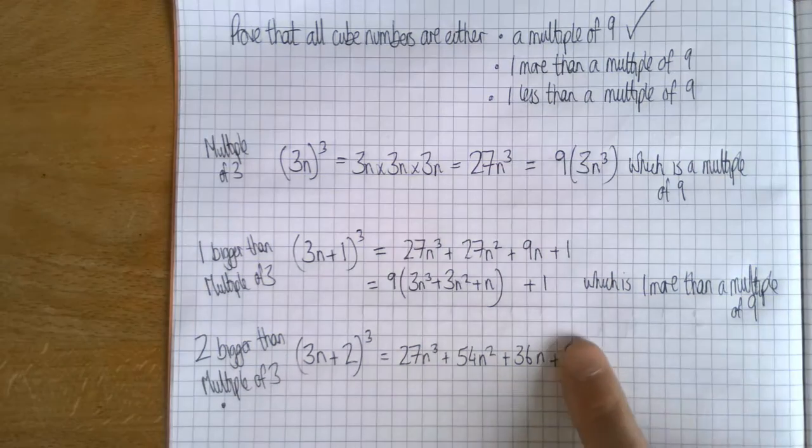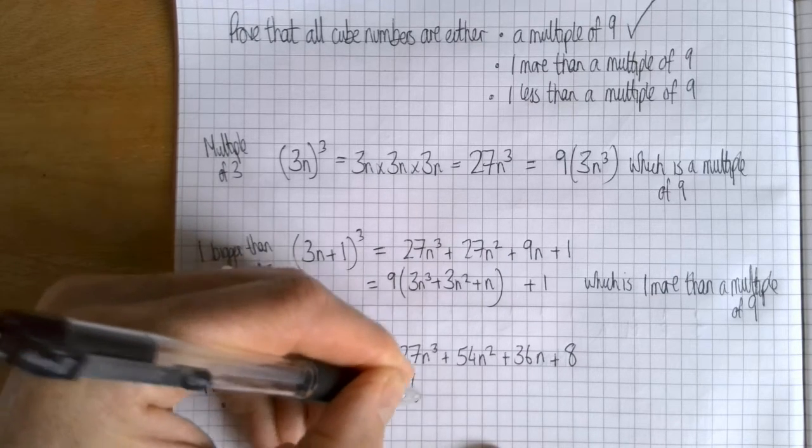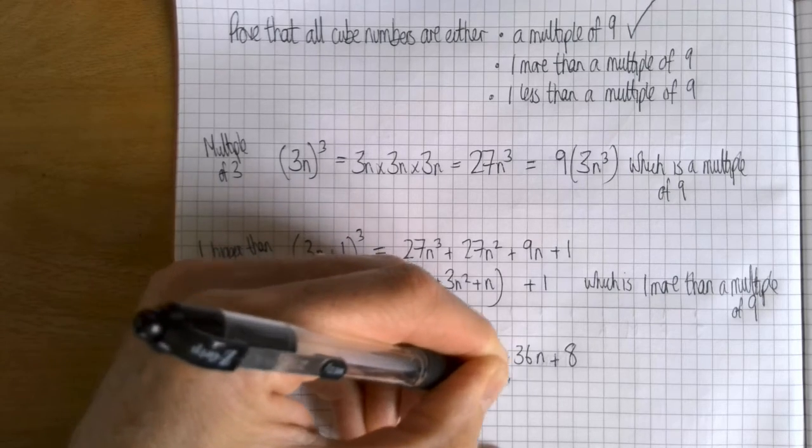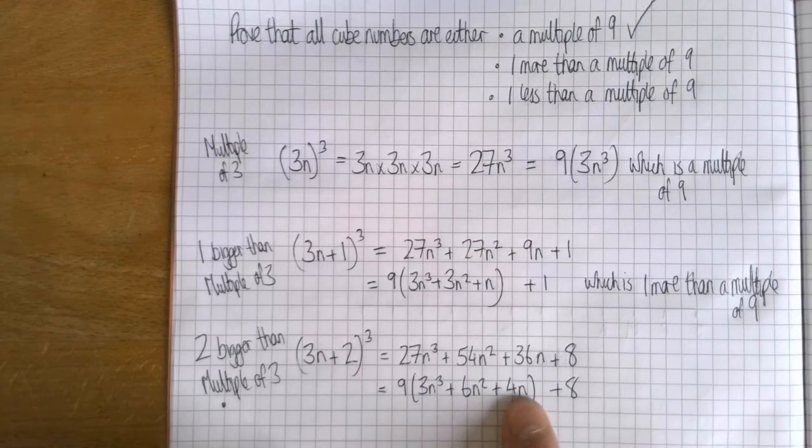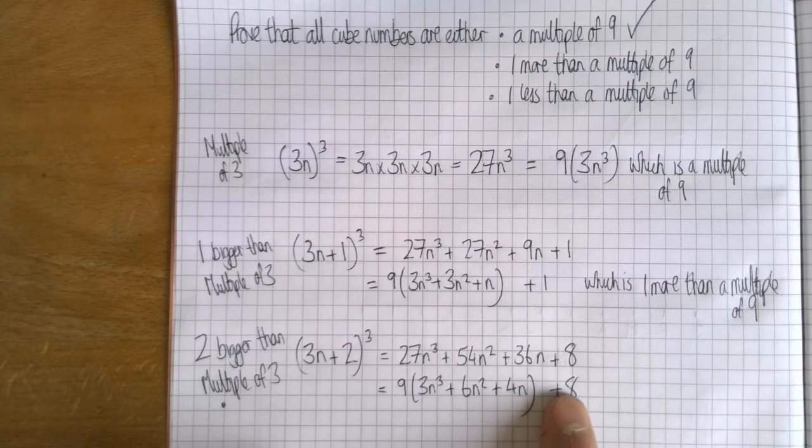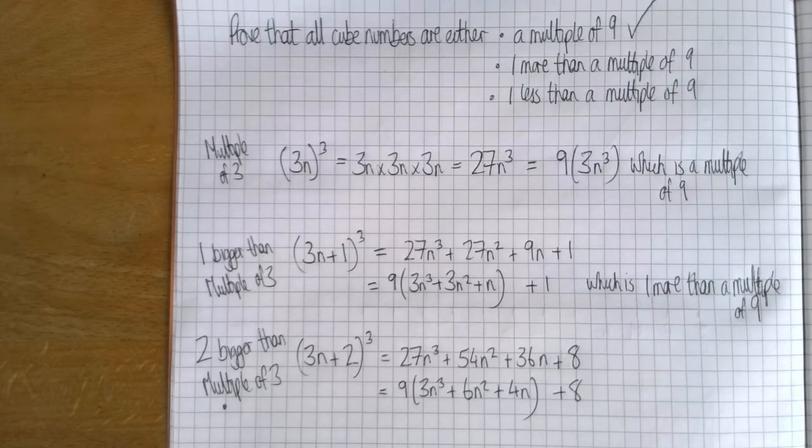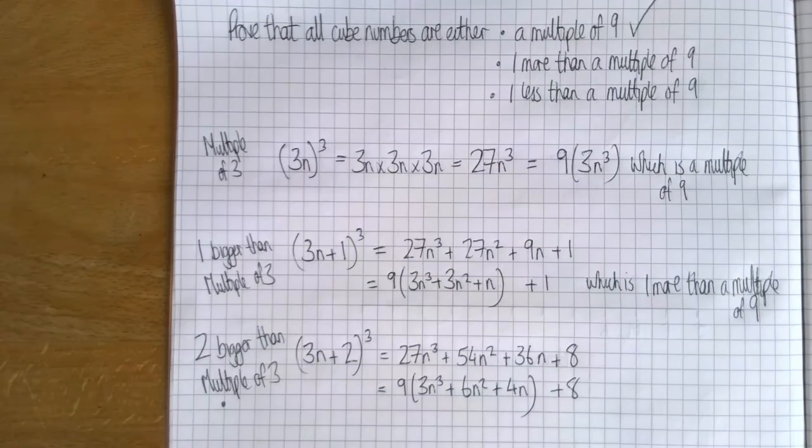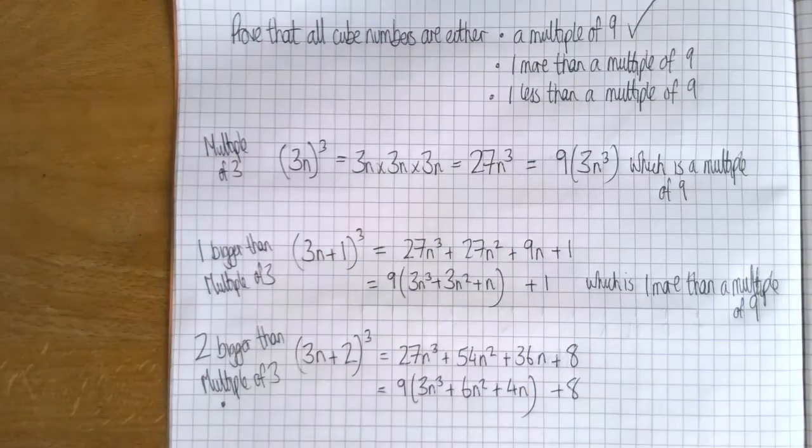And then if I do the same for this, ignore the eight. I've got nine lots of (3n³ + 6n² + 4n) plus eight. So that's a multiple of nine. If you add eight to a multiple of nine you get almost to the next multiple of nine, so you're one less than a multiple of nine. So which is one less than a multiple of nine. So therefore I have proved that all cube numbers are either that, that, or that.